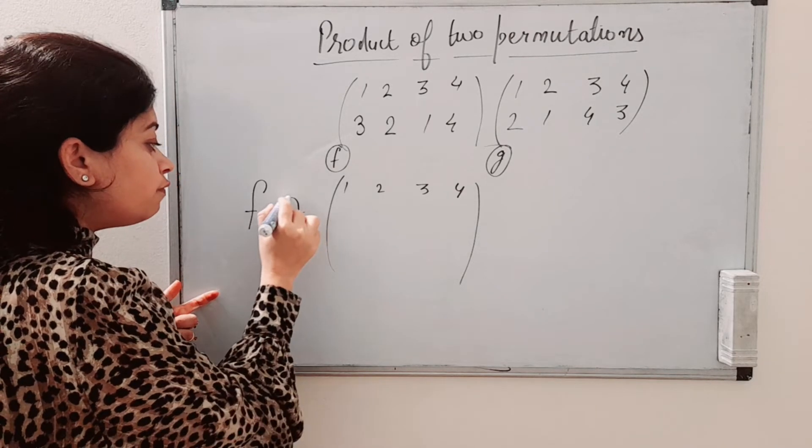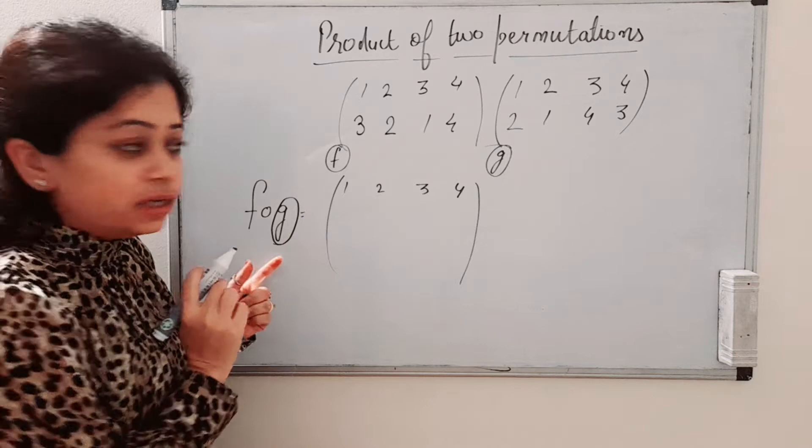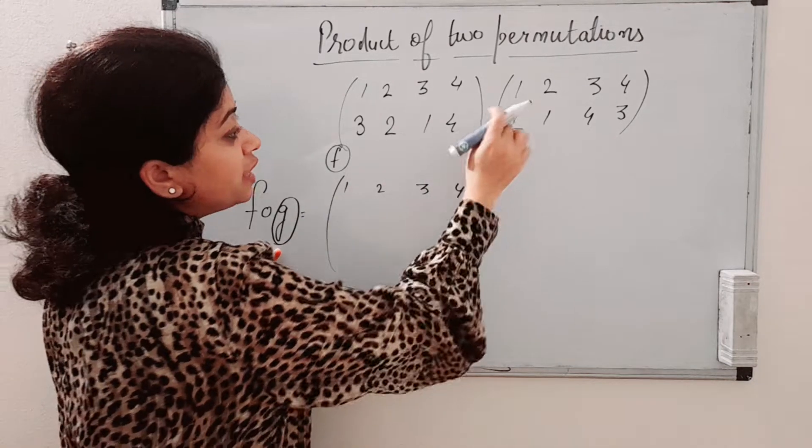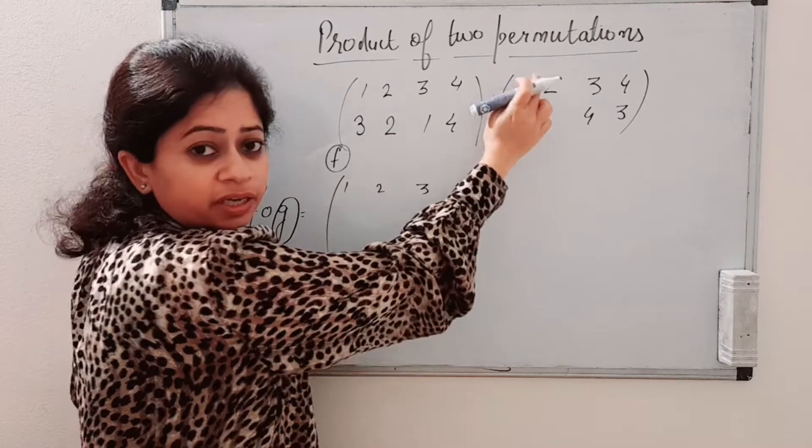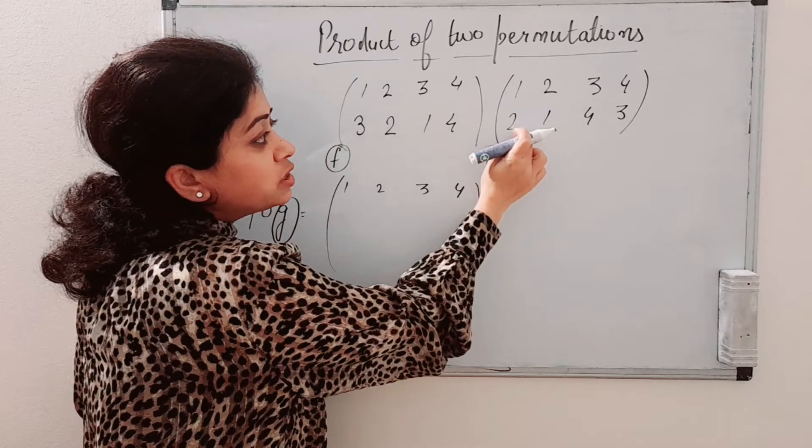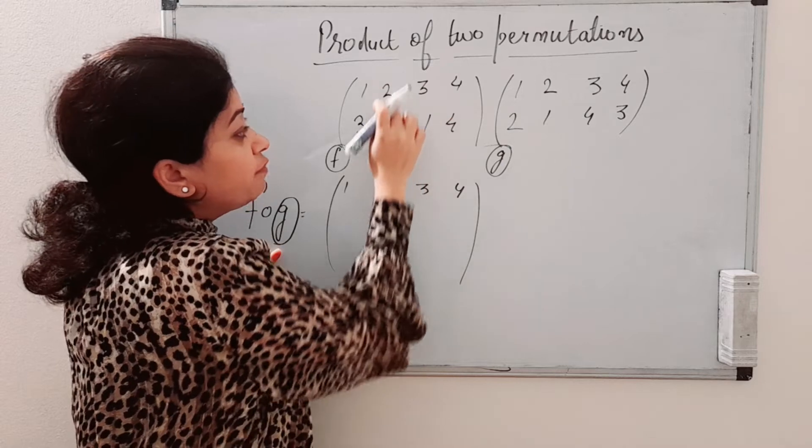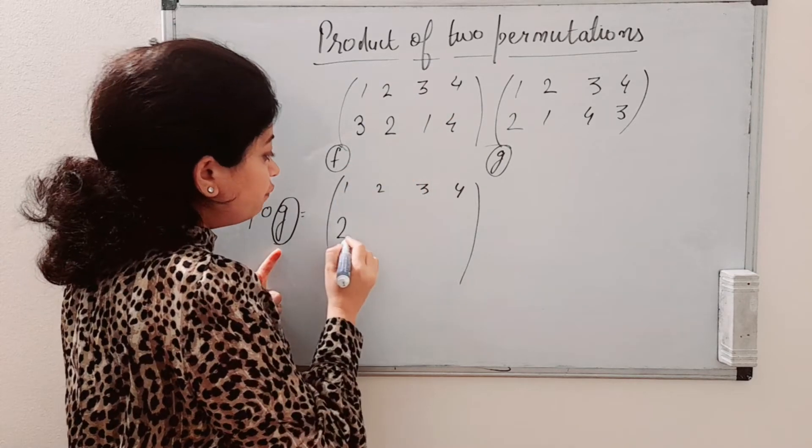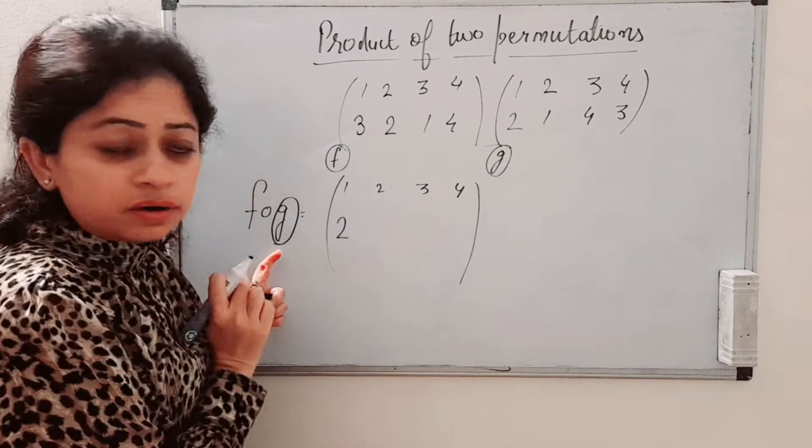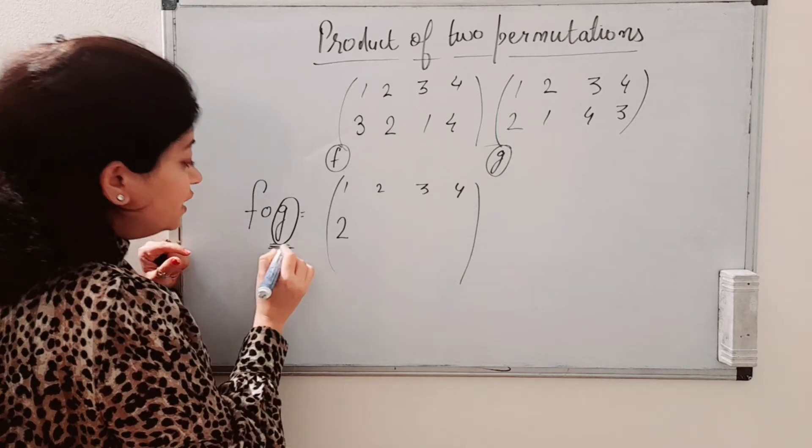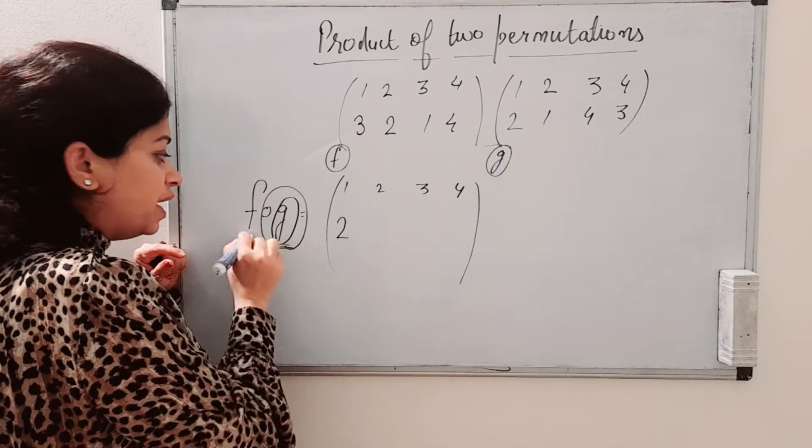That means first of all we will calculate G. So see what is the image of 1 in G. This is G. Image of 1 in G is 2. Then image of 2 in F is 2. That means image of 1 will be 2 here, because we will calculate G first and then on this we will apply F.